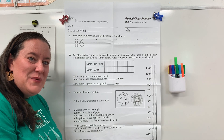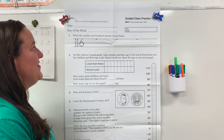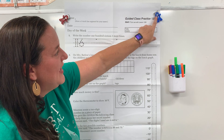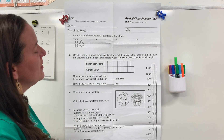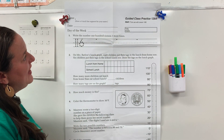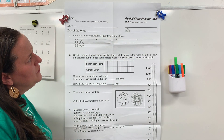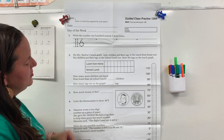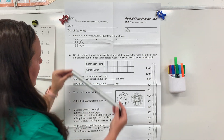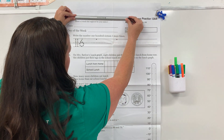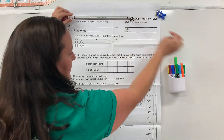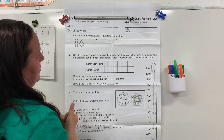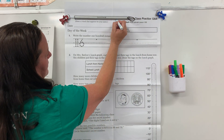Hi, boys and girls. Happy Wednesday. We are working on 128 today. And today we want to do a 3-inch line segment. So get out your ruler and do a 3-inch, nice straight line. If your line is not straight, I want you to erase it and redo it.